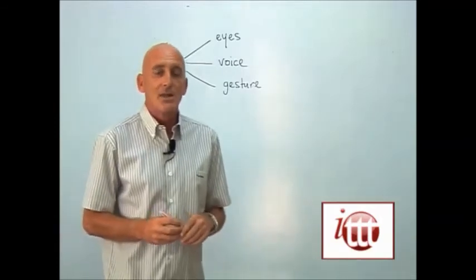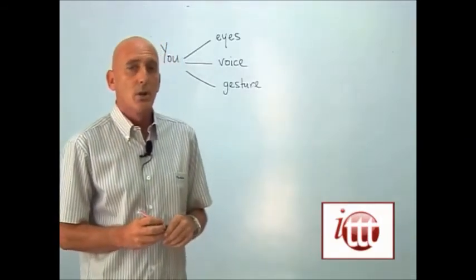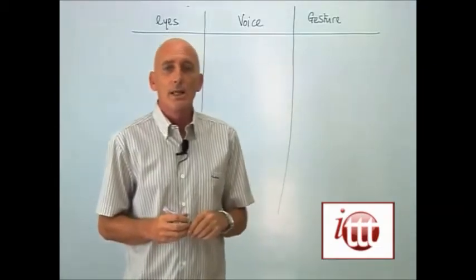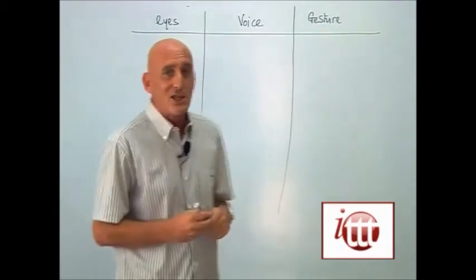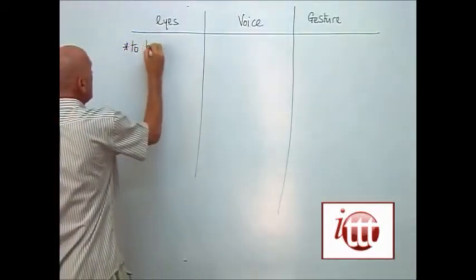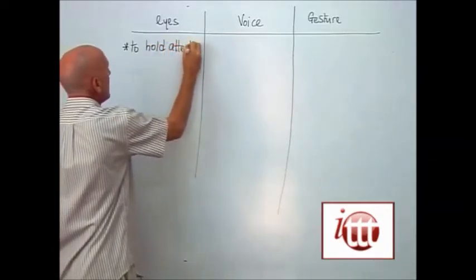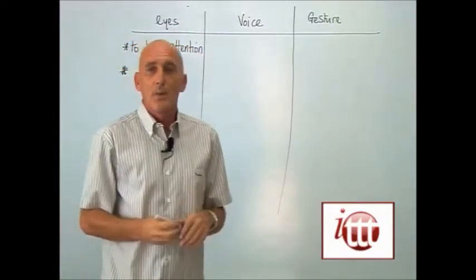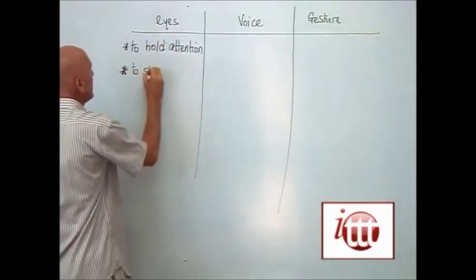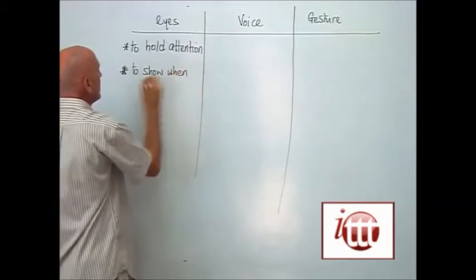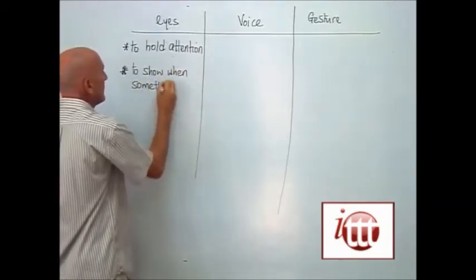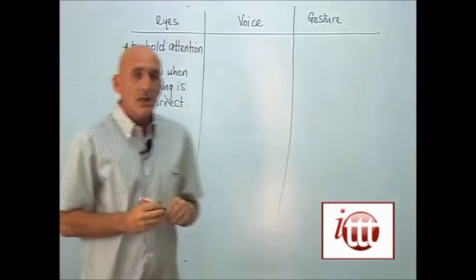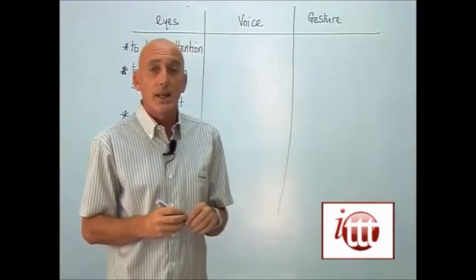Let's take each of these in turn and see how they can be used to help with the management of the classroom. Starting with our eyes first of all, the eyes can be used in a number of ways — they can certainly be used to hold attention, to show when something is correct, to give encouragement to students, and indeed to dissuade.